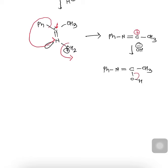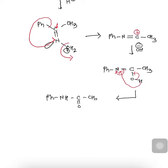After OH− attack, the resultant structure is Ph-N=C(OH)-CH3. There will then be rearrangement: the bond pair of OH forms a C=O, the valency of carbon increases, and this bond migrates with its electron pair toward the nitrogen atom. Finally, hydrogen also migrates toward the nitrogen atom, which becomes negatively charged, giving the final structure: Ph-NH-C(=O)-CH3.